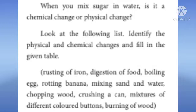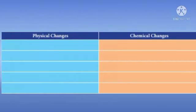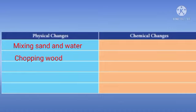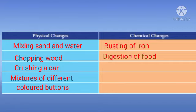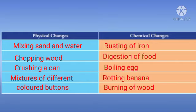When you mix sugar in water, is it a chemical change or a physical change? Look at the following list and identify physical and chemical changes. Physical changes include: mixing sand and water, chopping wood, crushing a can, and mixing different colored buttons. Chemical changes include: rusting of iron, digestion of food, boiling an egg, rotting banana, and burning of wood.